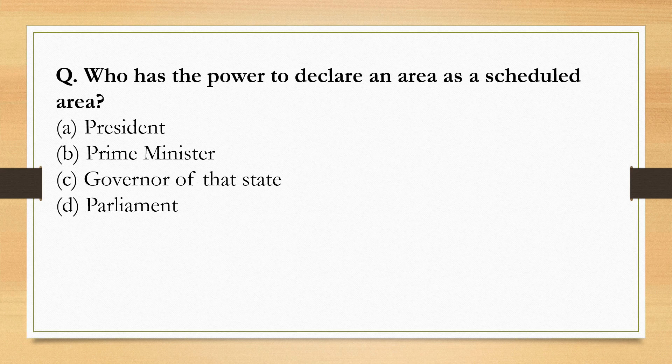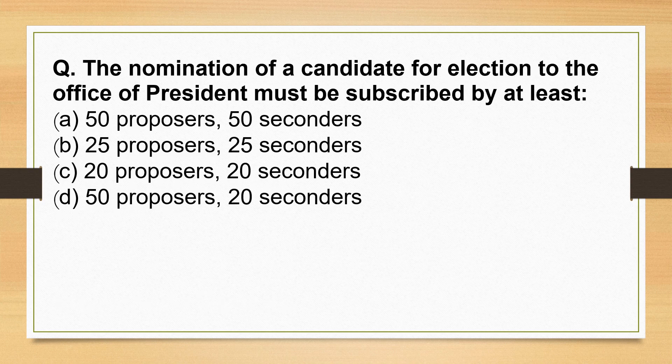Who has the power to declare an area as a scheduled area? This is the President of India. The nomination of a candidate for election to the office of President must be subscribed by at least 50 proposers and 50 seconders.